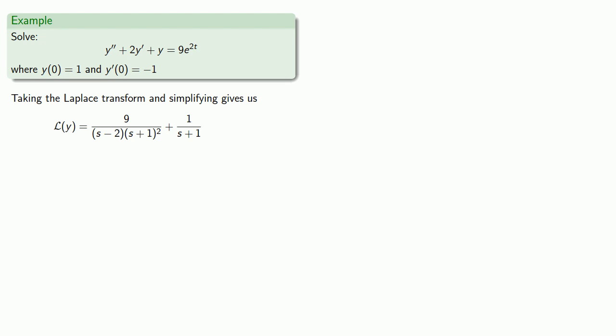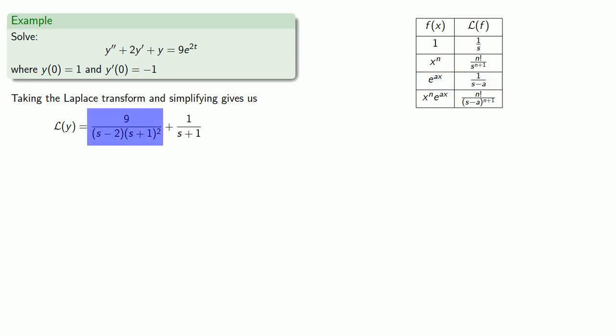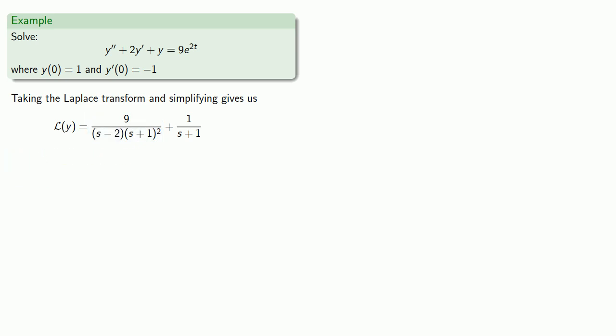Now 1 over s plus 1 is the Laplace transform of a function in our library, so we could leave that alone. For the rest, we'll have to rewrite our rational expression using partial fractions. So we'll assume that our fraction can be rewritten as a sum of fractions with denominators s minus 2, s plus 1, and s plus 1 squared.